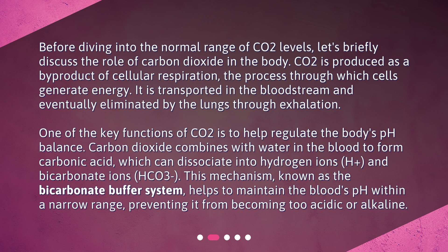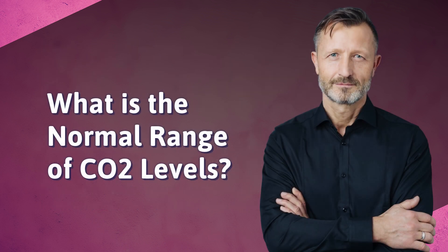CO2 is produced as a byproduct of cellular respiration, the process through which cells generate energy. It is transported in the bloodstream and eventually eliminated by the lungs through exhalation. One of the key functions of CO2 is to help regulate the body's pH balance. CO2 combines with water in the blood to form carbonic acid, which dissociates into hydrogen ions (H+) and bicarbonate ions (HCO3-). This mechanism, known as the bicarbonate buffer system, helps maintain the blood's pH within a narrow range, preventing it from becoming too acidic or alkaline.